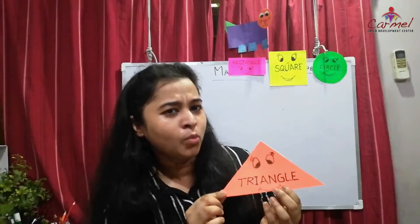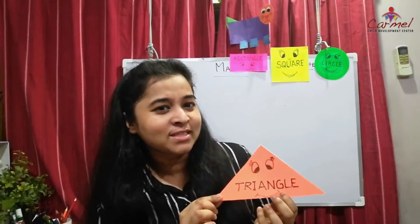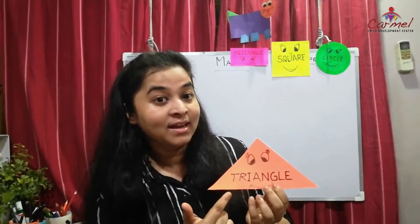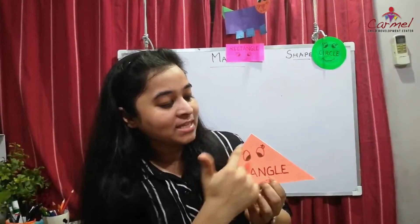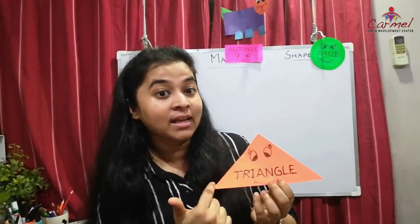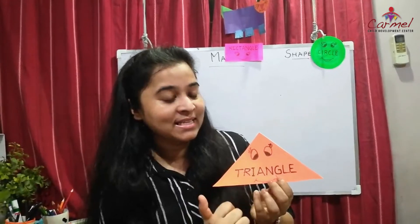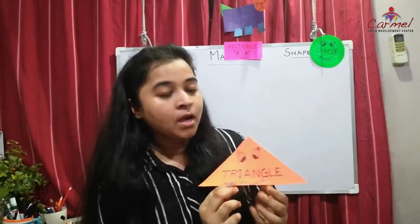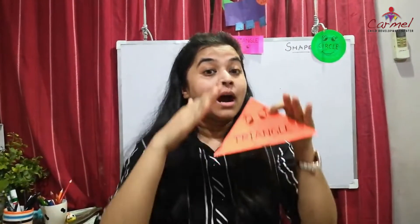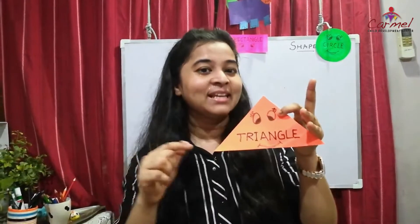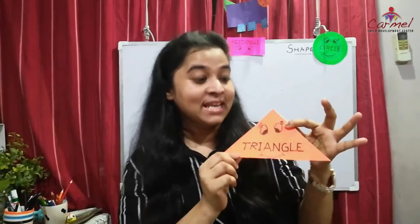The next shape — which shape is this? It's a triangle. The triangle has three sides. You can see the mountain — it looks like a triangle in shape. And the hut also looks like a triangle in shape.